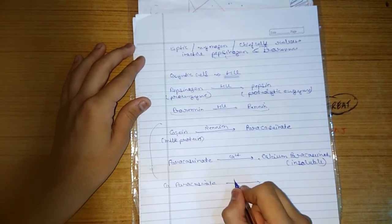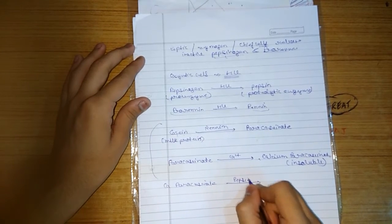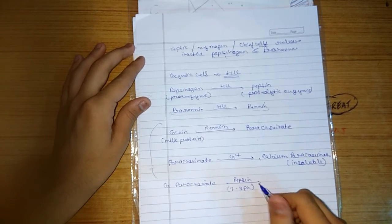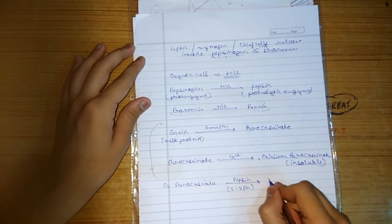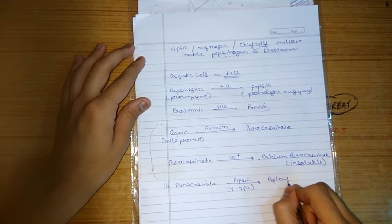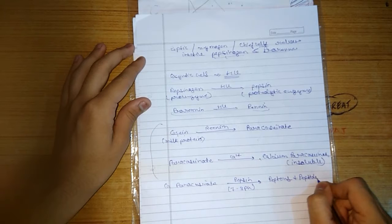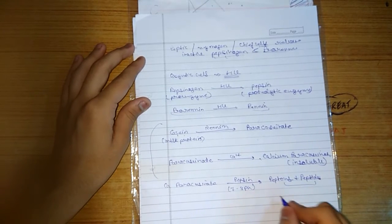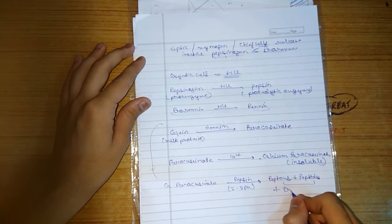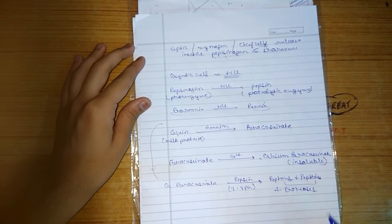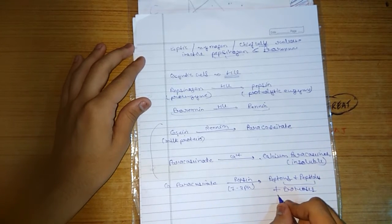With the action of pepsin at pH one to three, it converted into peptones plus peptides plus proteoses and polypeptides.